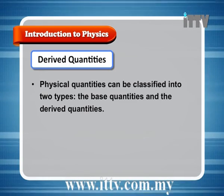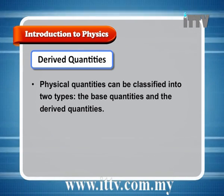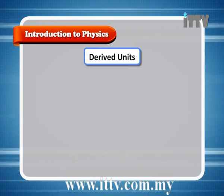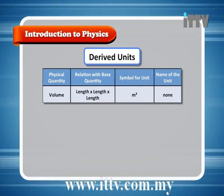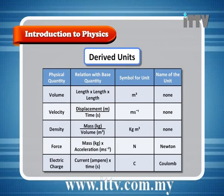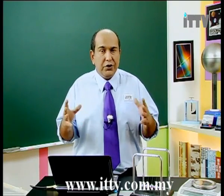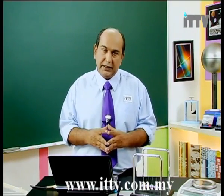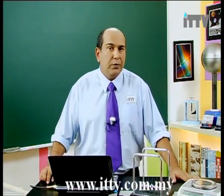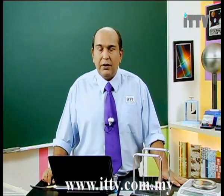Derived quantities: physical quantities can be classified into two types — base quantities and derived quantities. Derived units are produced from the base units. Examples of derived quantities include volume, velocity, density, force, and electric charge. We can normally derive the unit based on a physics formula. Any simple formula will allow us to work out the derived units.